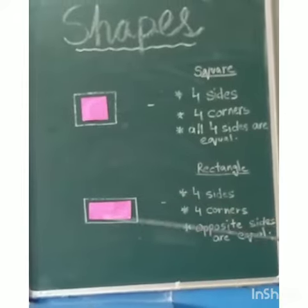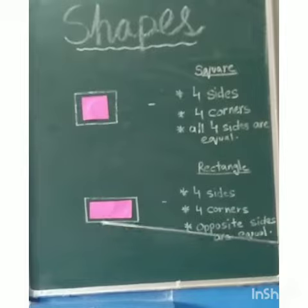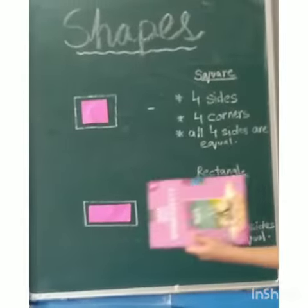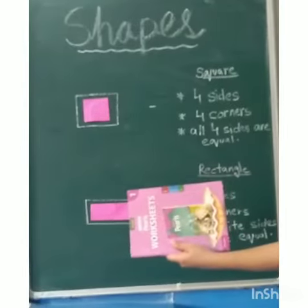The opposite sides of a rectangle are equal. This is an example of a rectangle.